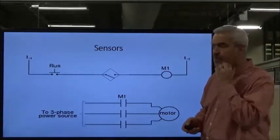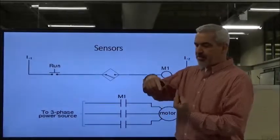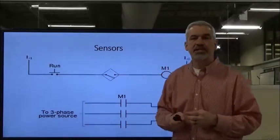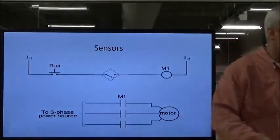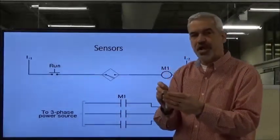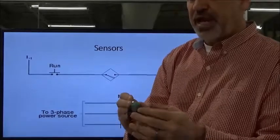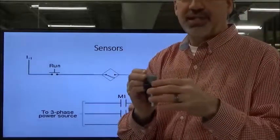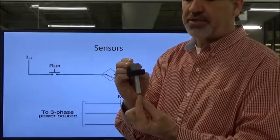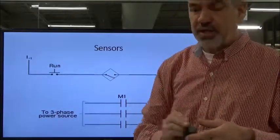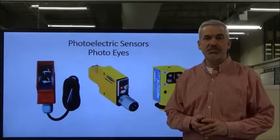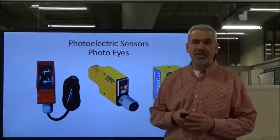Going back to the cylinder example — the piston comes very close to the switch. That's an inductive proximity switch. We provide a voltage to it to operate, and the voltage also passes through the electronic circuitry, passing the signal through once it sees that piston up close. You'll work with both capacitive and inductive proximity switches in the lab, putting different targets in front of them.